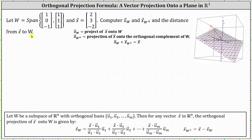So in our example, we're told to let W equal the span of the vectors (1, 0, -1) and (1, 1, 1). These are the vectors u sub one and u sub two. And vector x is the vector (2, 3, -2). We're asked to compute vector x sub W, which is the orthogonal projection of vector x onto W, as well as vector x sub W perp, which is the projection of vector x onto the orthogonal complement of W.